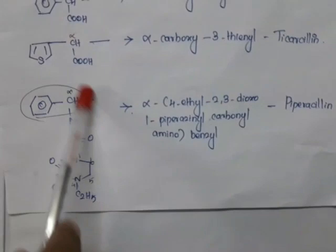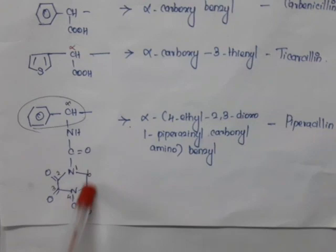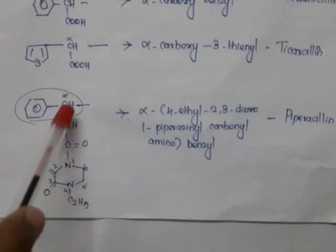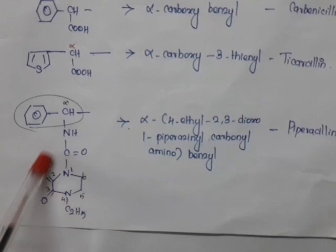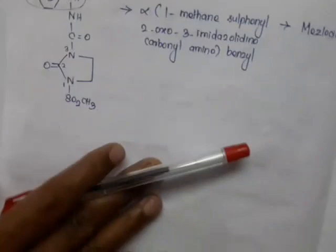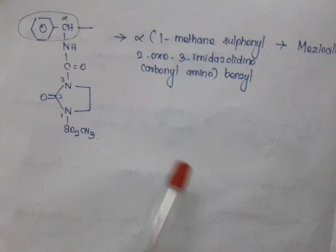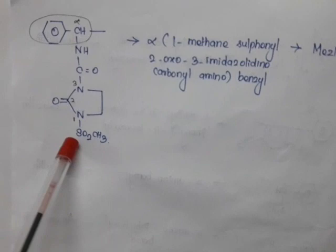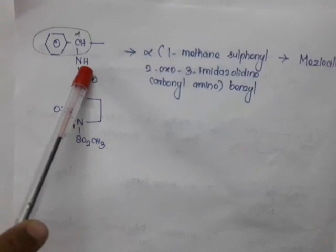When R = a benzyl group with an amino group, a carbonyl group, and a 4-ethyl-2,3-dioxopiperazin-1-yl (piperazinyl) group attached at the alpha carbon — specifically (4-ethyl-2,3-dioxopiperazin-1-yl)carbonylaminobenzyl — it is piperacillin. When R = a benzyl group with a 1-methanesulfonyl-2-oxo-3-imidazolinyl carbonyl amino group at the alpha carbon — that is, 1-methanesulfonyl-2-oxoimidazolidin-3-yl carbonylaminobenzyl — it is mezlocillin.